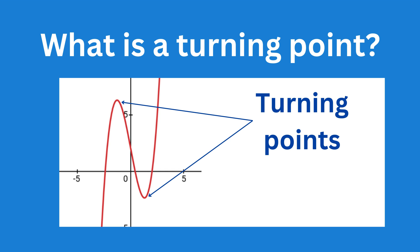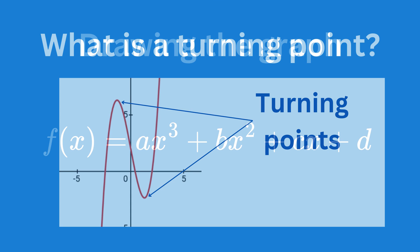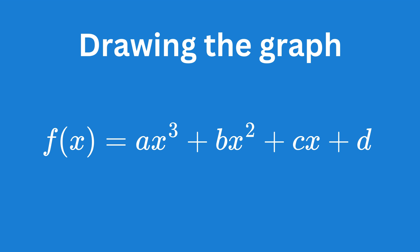These points are also referred to as local maxima and minima. The maxima looks like a hill and the minima looks like a trough. Before we dive into turning points, let's visualize what a cubic function looks like.